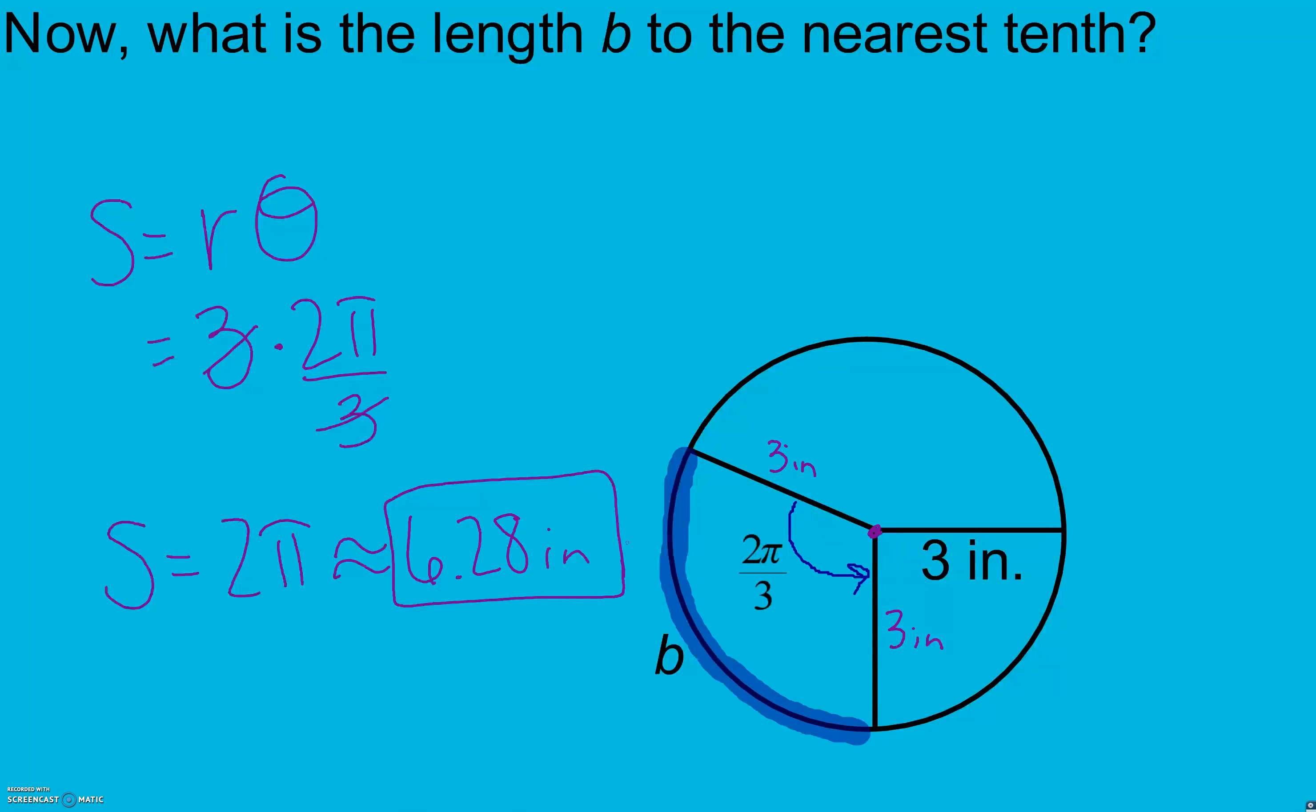I know some of you are probably thinking, but 2π is a full circle. This isn't a full circle, it's just part of one. And that's right, 2π is a full circle when we're talking about our unit circle with a radius of 1.